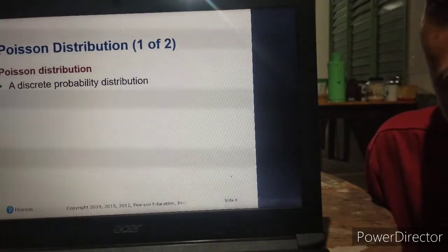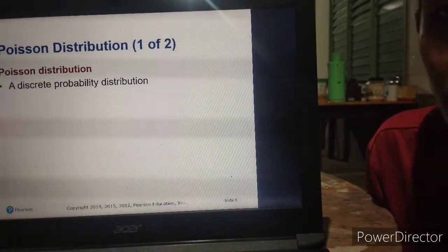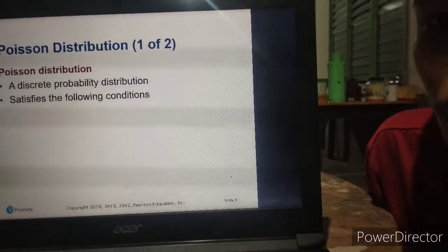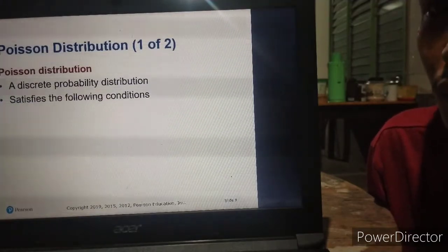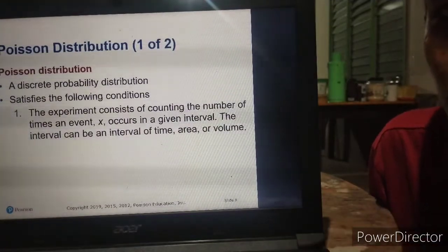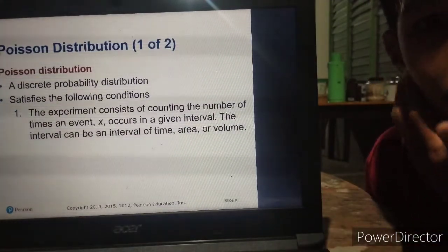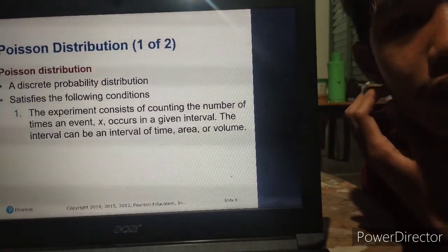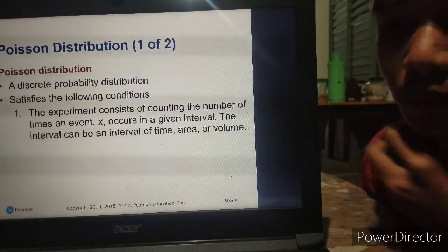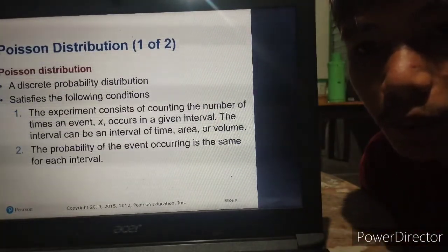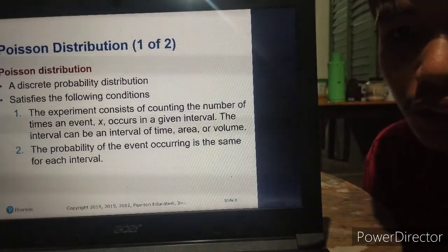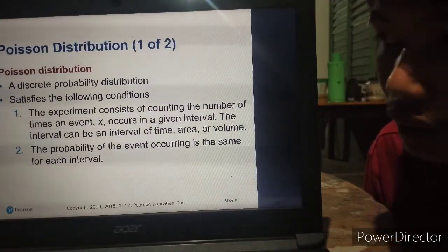Let's proceed to Poisson distribution. Poisson distribution is also a discrete probability distribution. It is Poisson if it satisfies the following conditions: First, the experiment consists of counting the number of times an event X occurs on a given interval. The interval can be an interval of time, area, or volume. Second, the probability of an event occurring is the same for each interval, so this means that the probability of occurrence is constant.